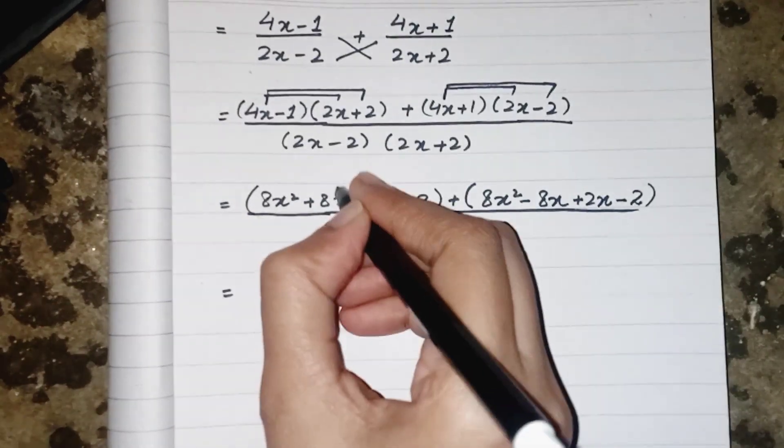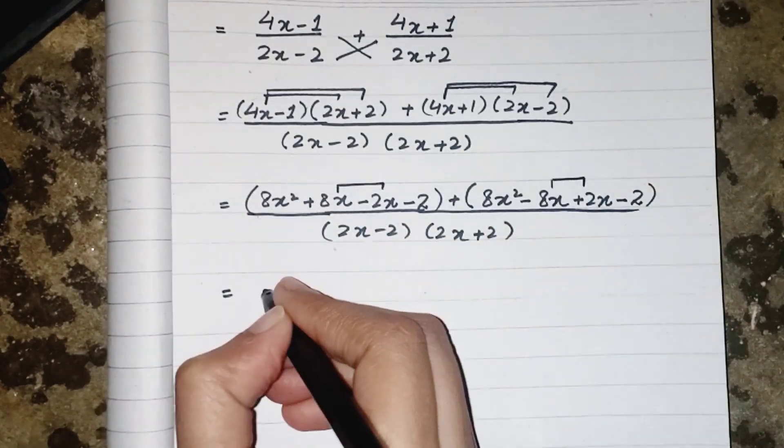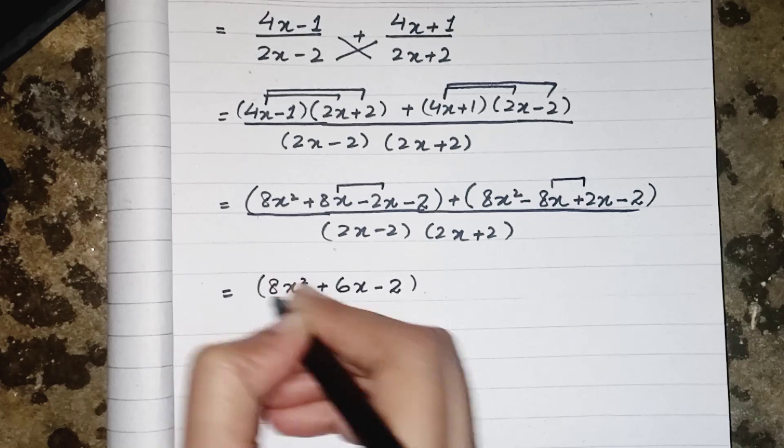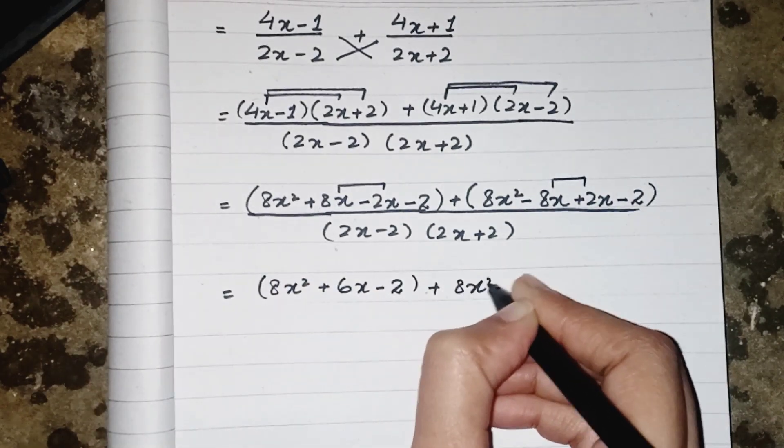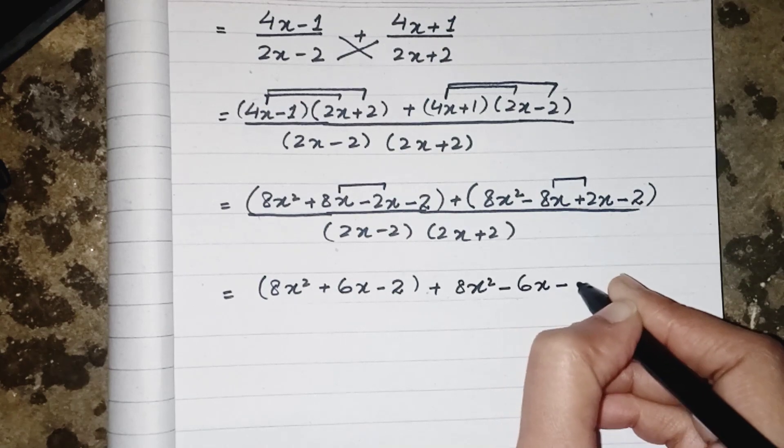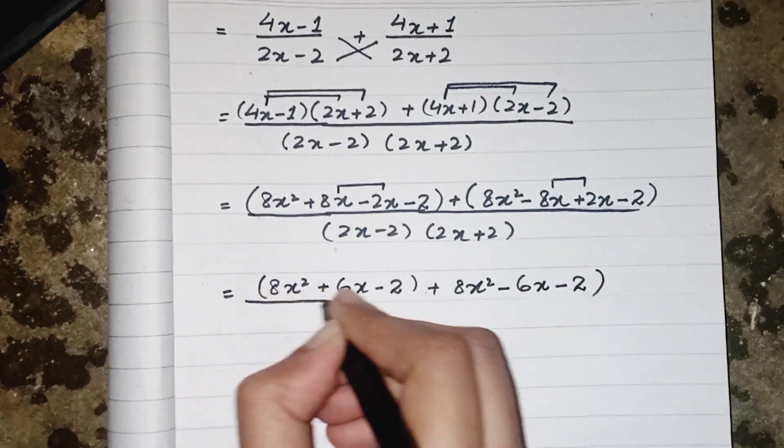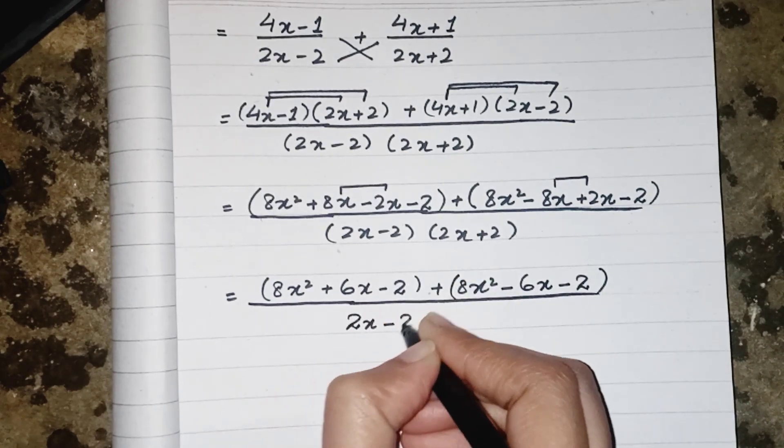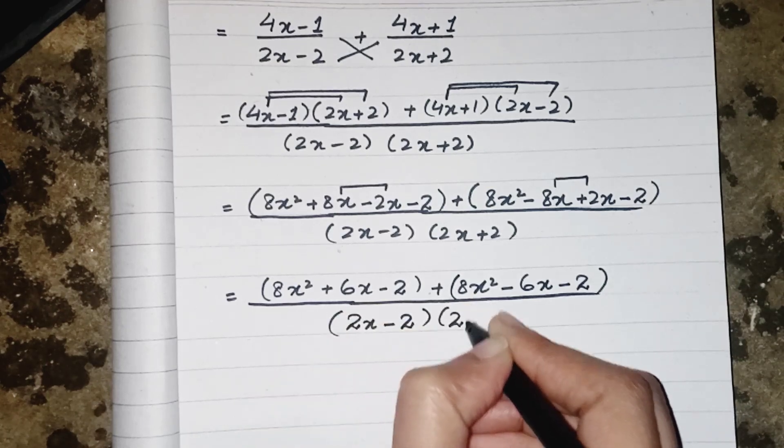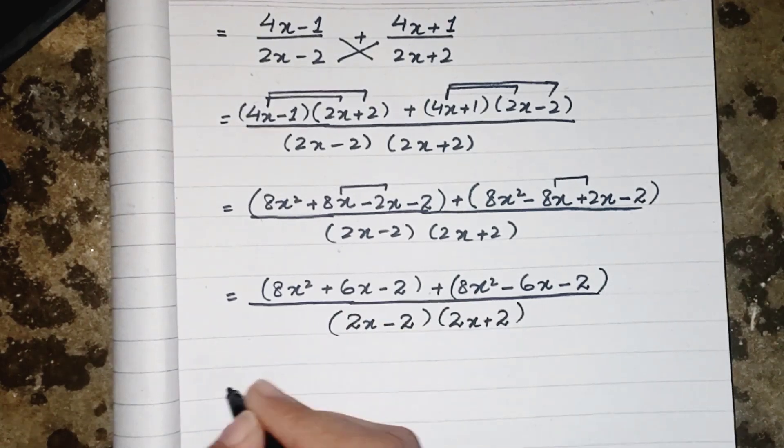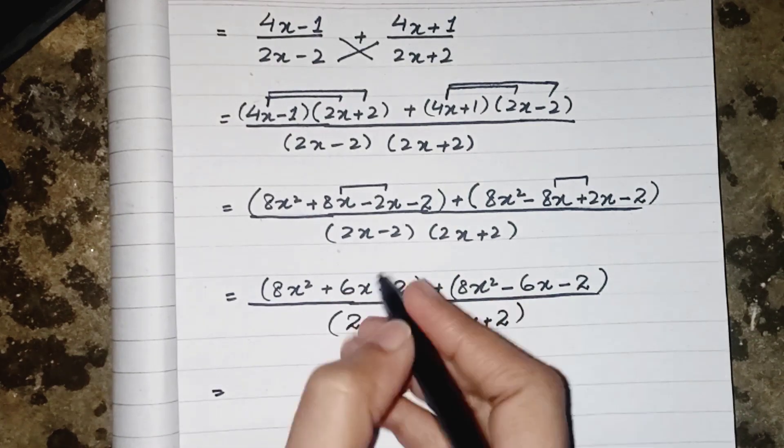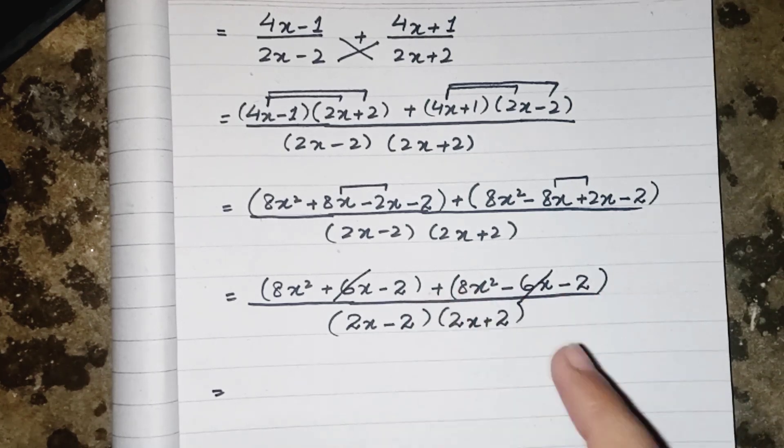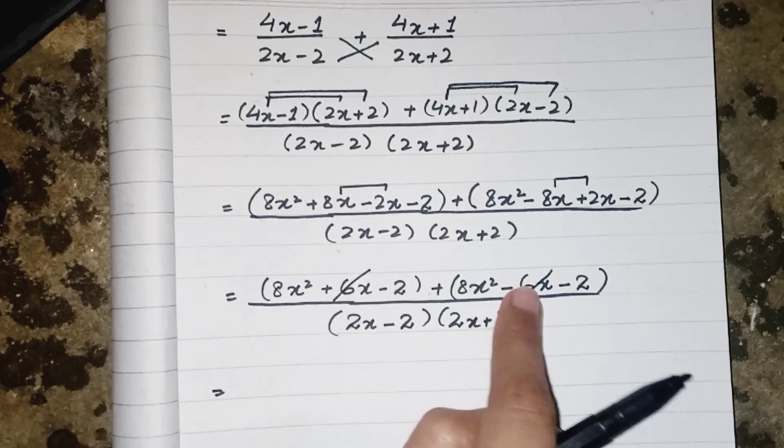Now these are the like terms and we can solve them. 8x squared plus 6x minus 2 plus 8x squared minus 6x minus 2 upon 2x minus 2, 2x plus 2. This one is plus 6x and this one is minus 6x. It's in the bracket but outside the bracket we have positive sign so it doesn't change the sign of the bracket. So both will be cancelled out.